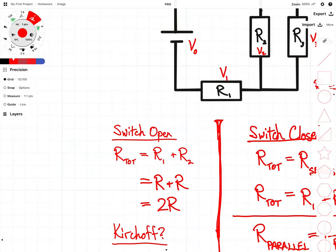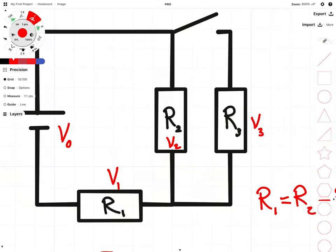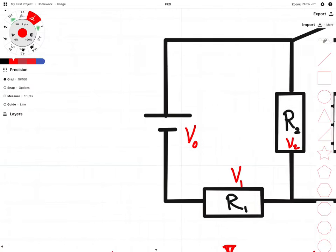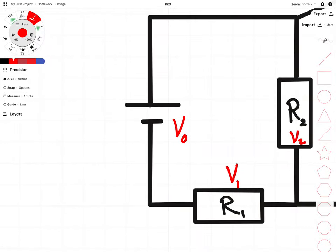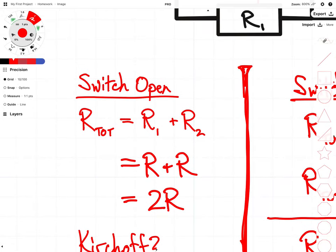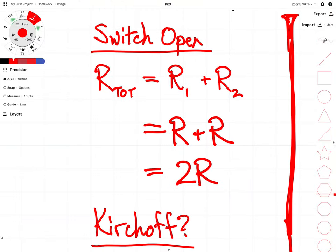All right, so let's talk about switch open. When this switch is open, R3 is not going to receive any current because it is not present in a loop. We need a closed loop to complete a circuit. So R sub three will not be included in our initial analysis. All we need to look at is R sub one and R sub two, and what we have here is a basic series circuit. When the switch is open, then we have R total is equal to the resistance of resistor one plus the resistance of resistor two. As they're both equal to R, we substitute in R and we get a total of two R. Very straightforward analysis.